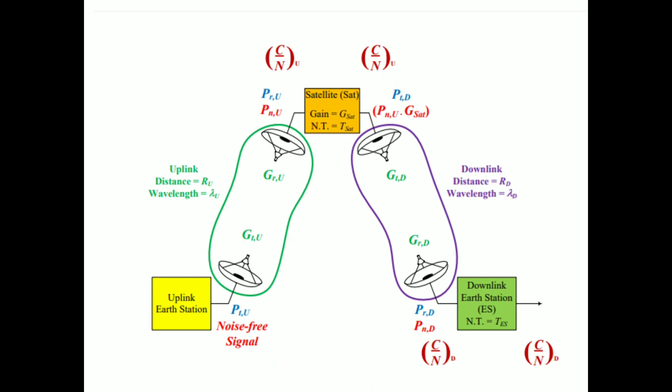The signal to noise ratio of an uplink is nothing but PRU divided by PNU. Now the signal is processed at the satellite and sent to the earth station through the antenna system. At the earth station, the power being received is PRD and the noise at the earth station is PND, so the signal to noise ratio at the downlink is PRD by PND.